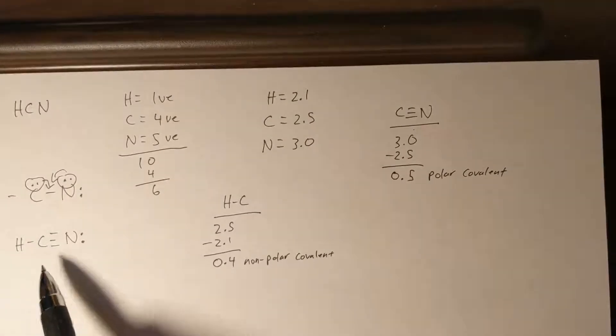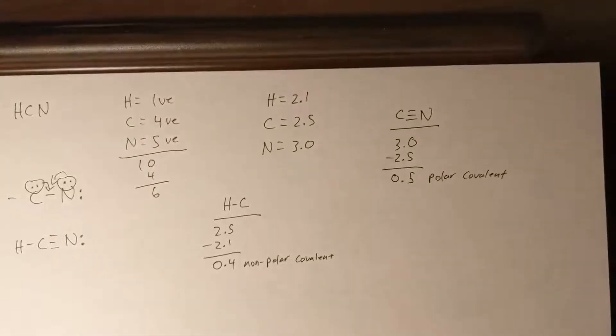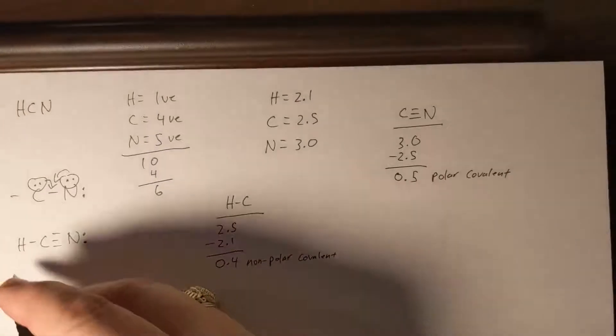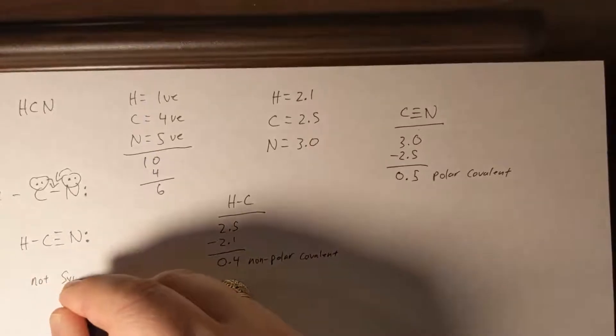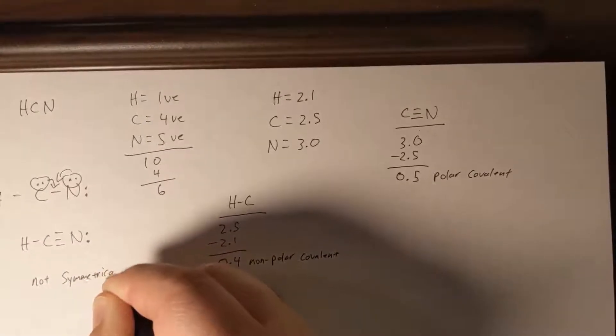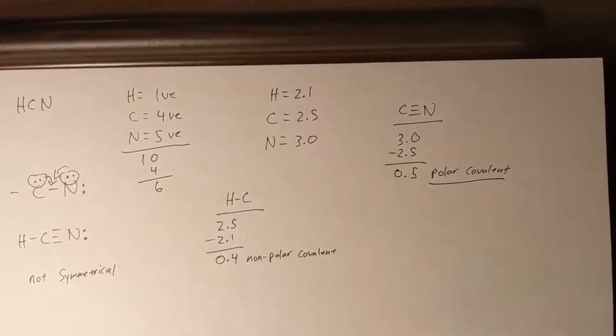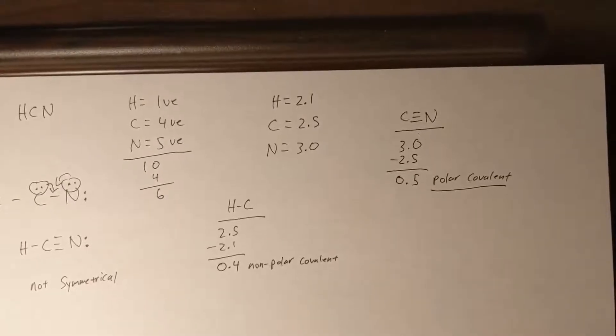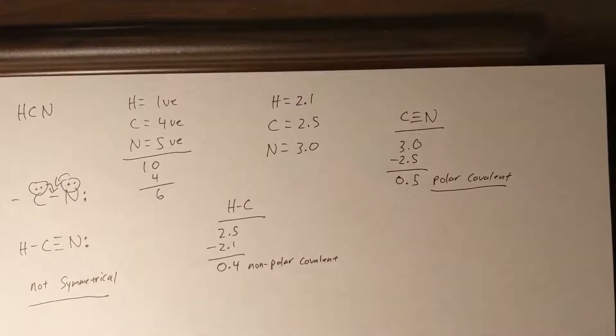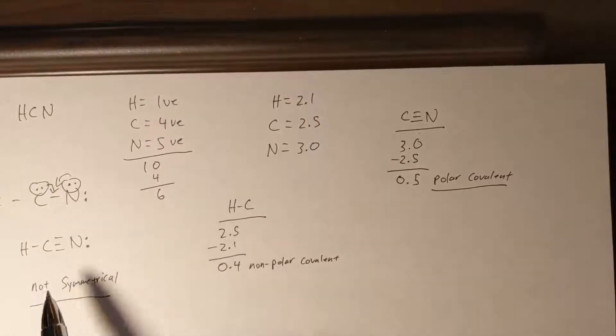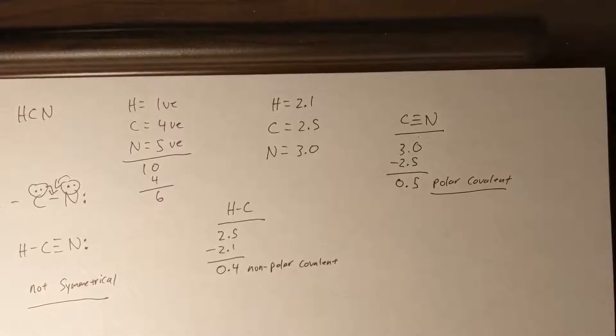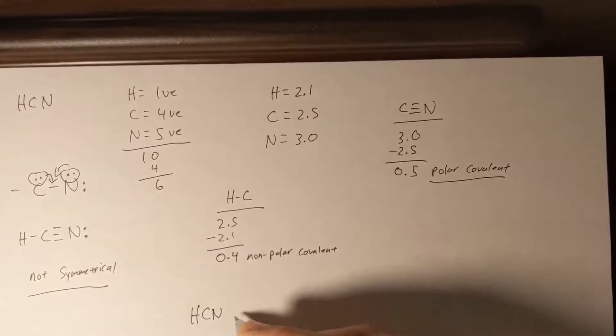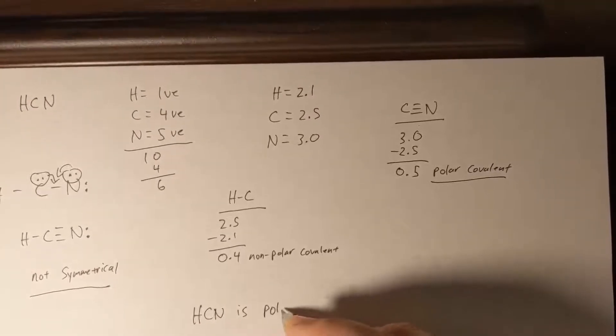So I've got one nonpolar bond over here and one polar bond over here. And we can tell from looking at the Lewis structure that HCN is not symmetrical. And all we need is to have a single polar covalent bond in the molecule to make the entire molecule polar as long as our molecule is either not symmetrical or it would have had a lone pair on its center atom. In this case there's no lone pair, but we are not symmetrical. So HCN is polar.